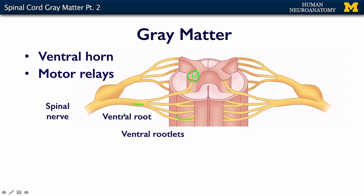We'll talk more about the details of the spinal nerves in the peripheral nerve segment of this spinal cord lecture. What I want you to think about is that in this area, you've got great big motor neurons and the information is leaving and going out to synapse on some sort of muscle. All of these axons from different levels of the spinal cord are coming through the rootlets, coalescing within the root, and then joining with the dorsal root to form the spinal nerve — and that's a functional unit.